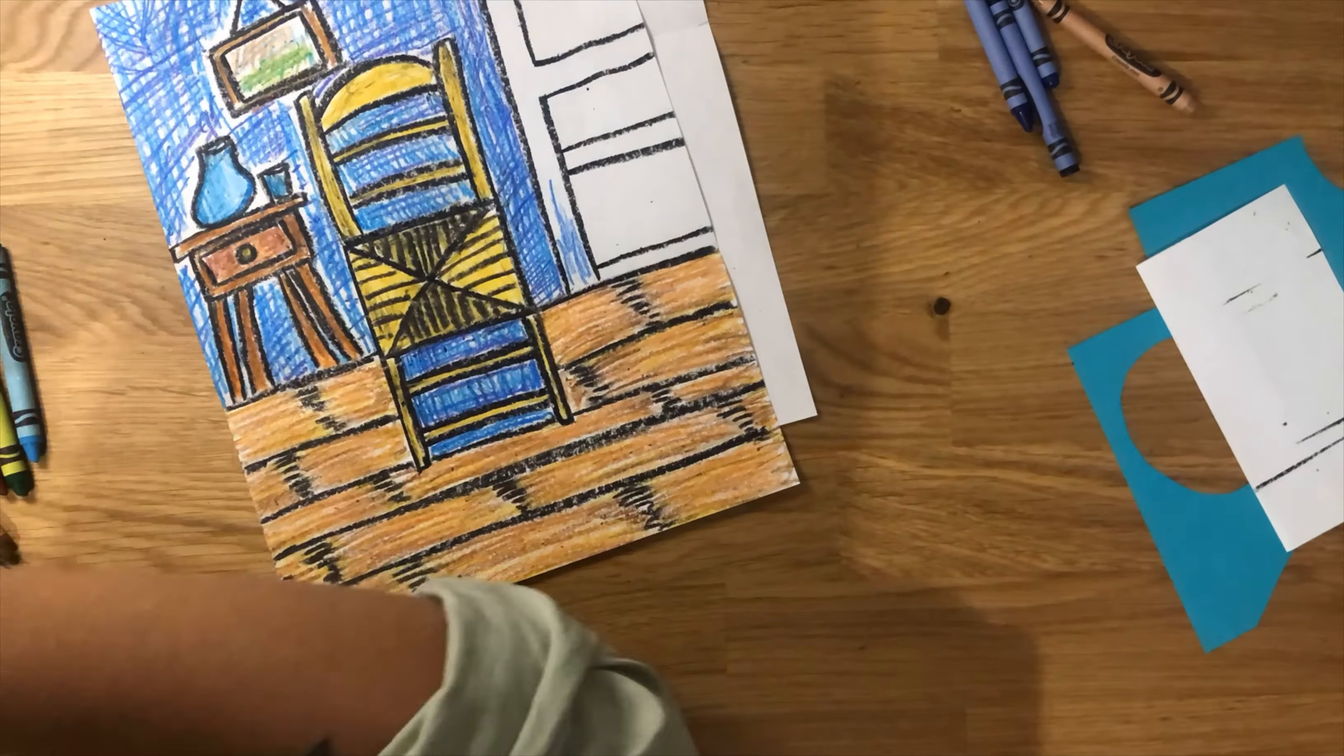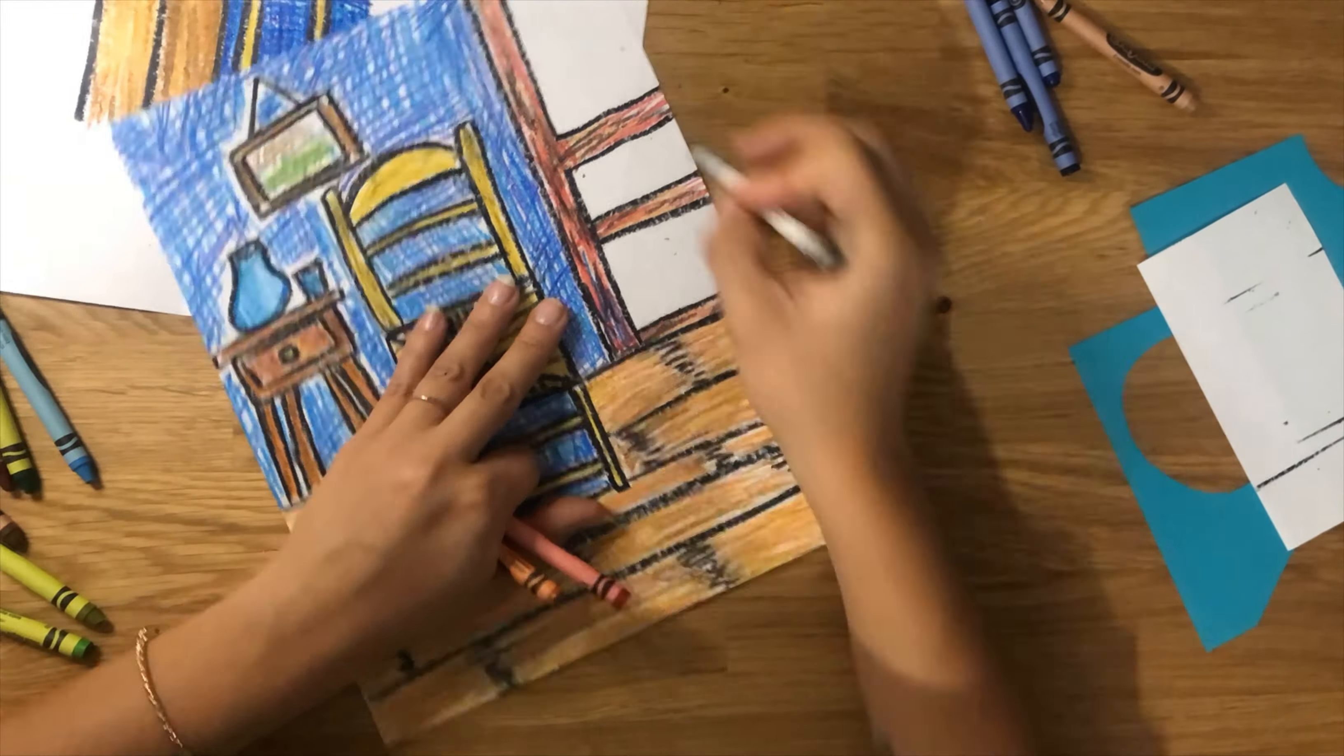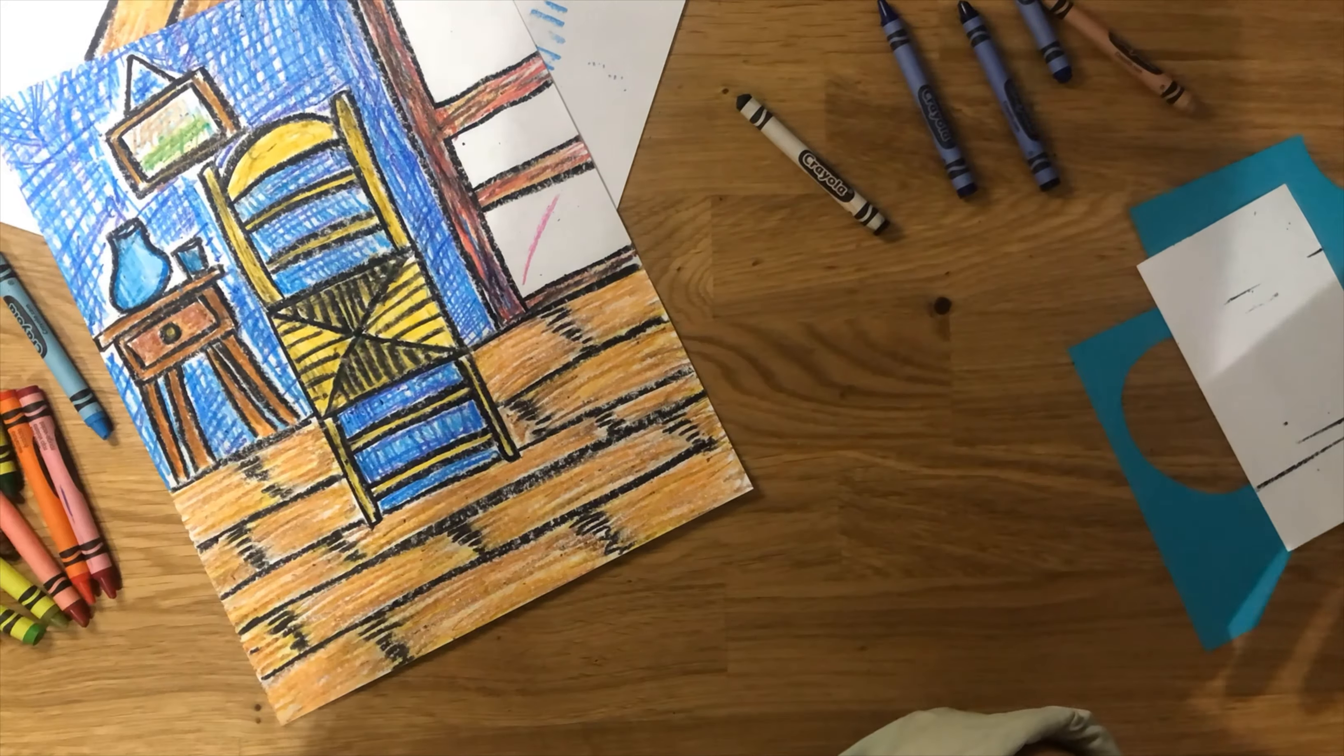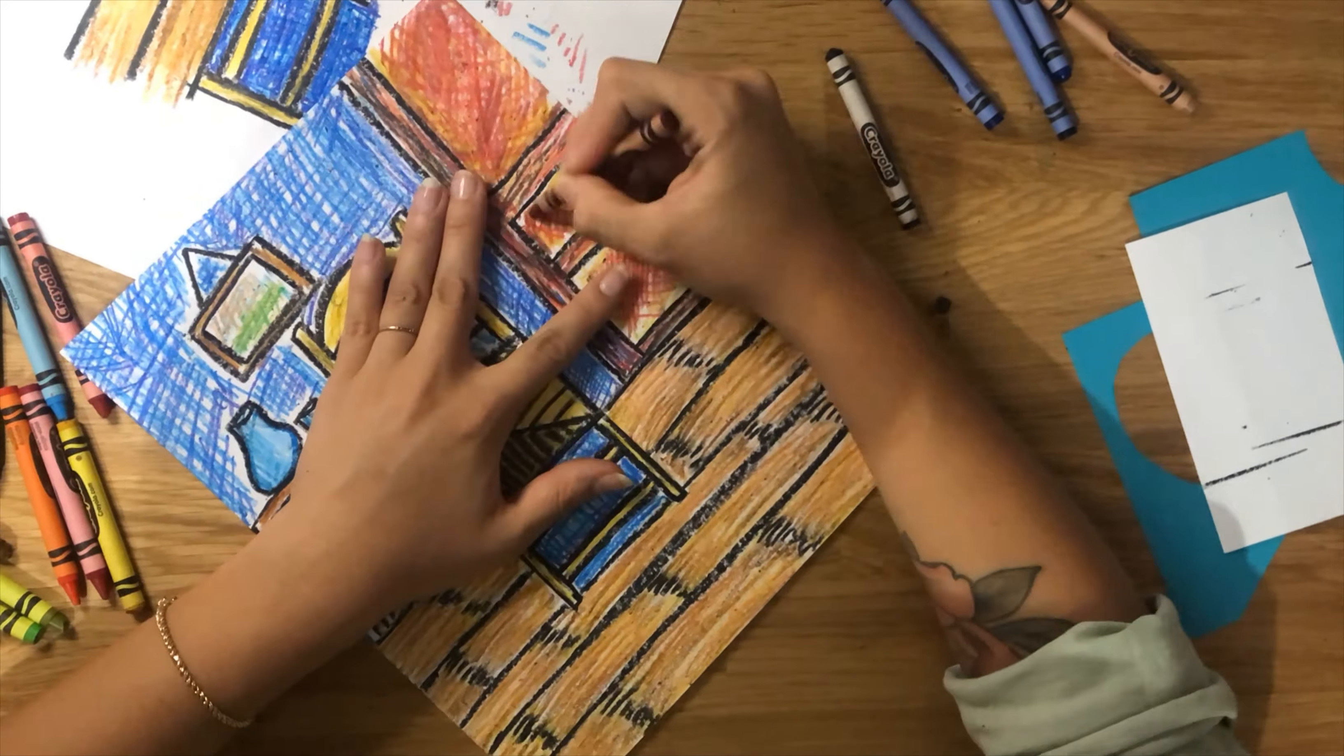I used the same technique for the door, except I switched the colors. I added yellow, brown, red, and even black all on top of each other. This is going to make again more dimension to make it look like a Van Gogh painting.